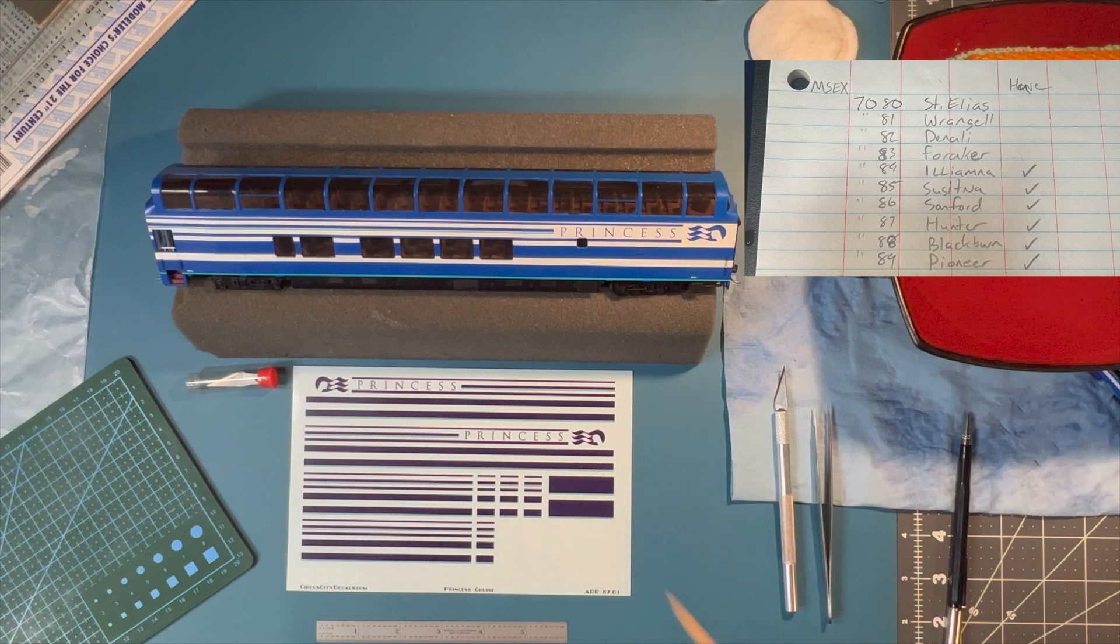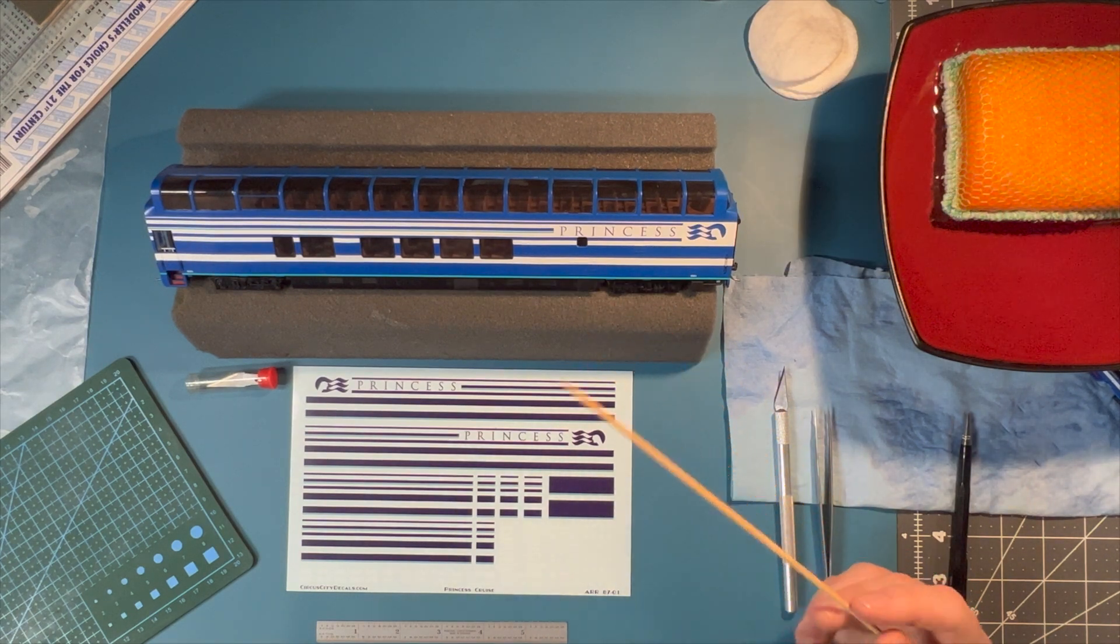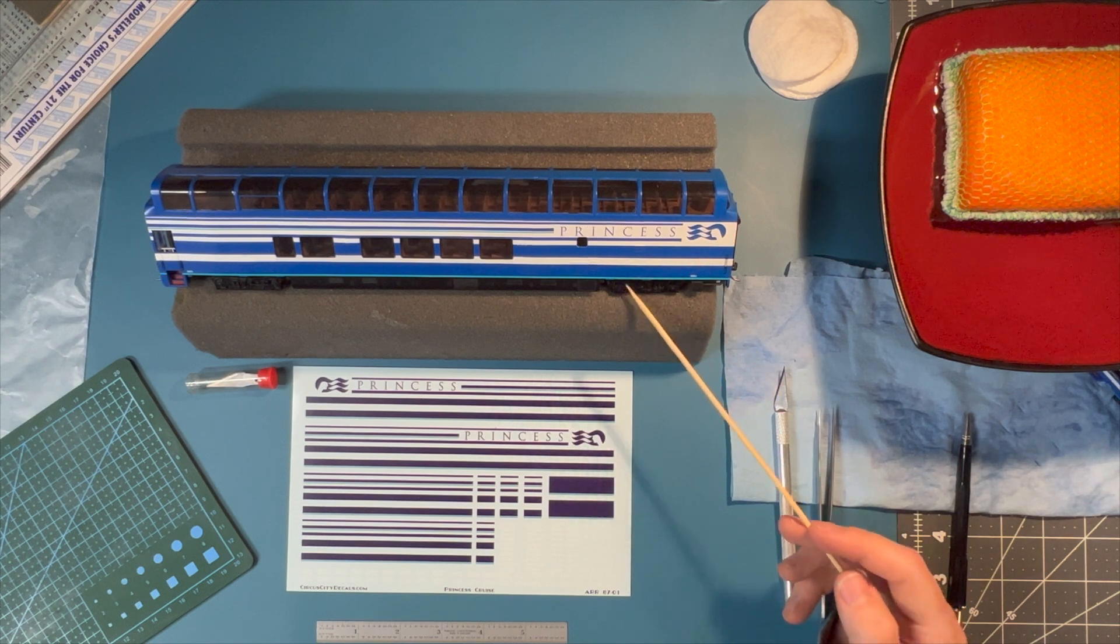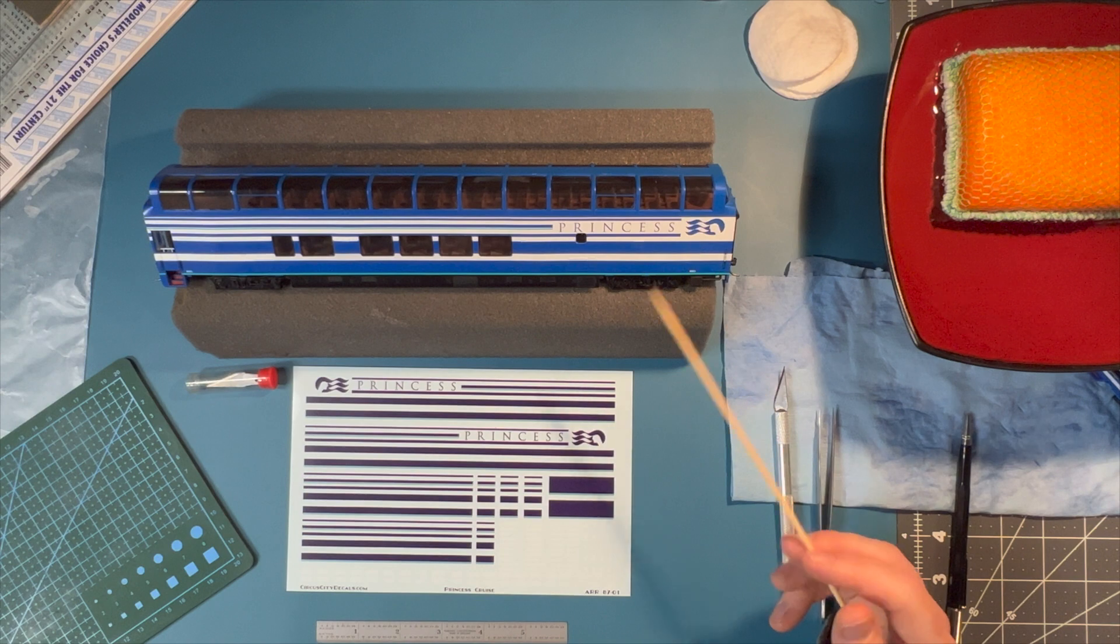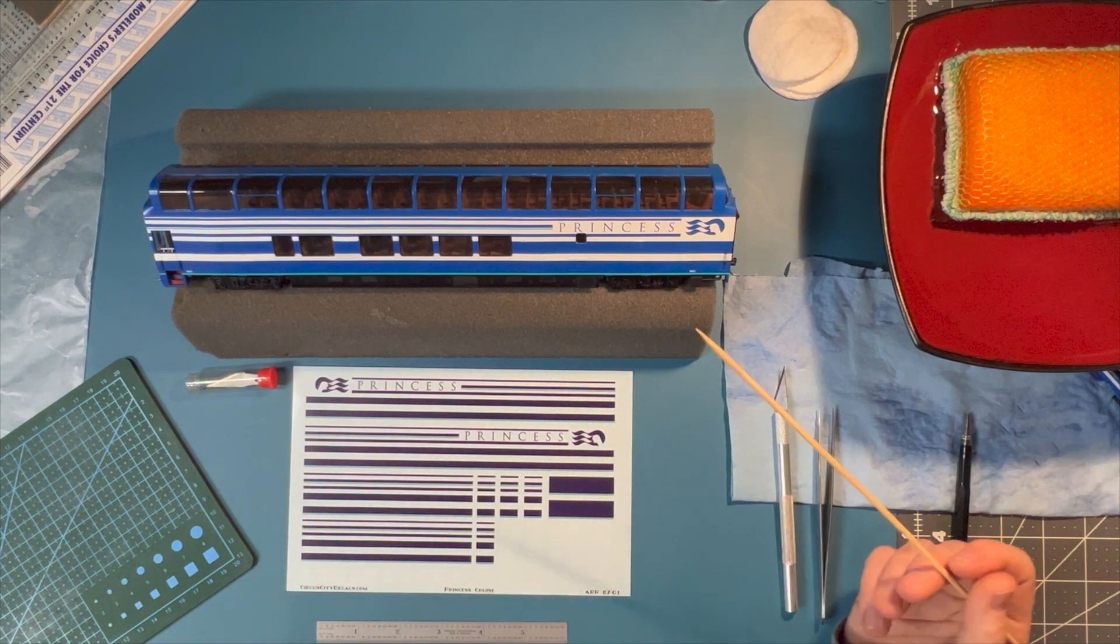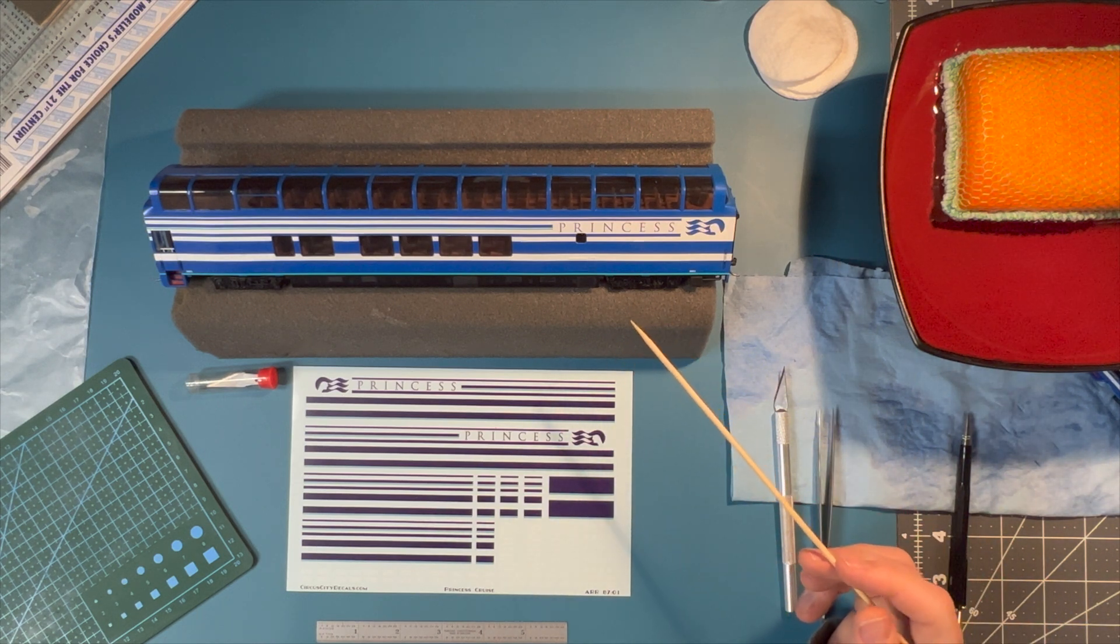So 7081, 7082, 7083. So like I said, I will still need to get one more standalone Princess Cruise Lines Denali Express car from the interwebs that I'll have to also remove the number and remove the name and decal with the St. Elias number 7080.